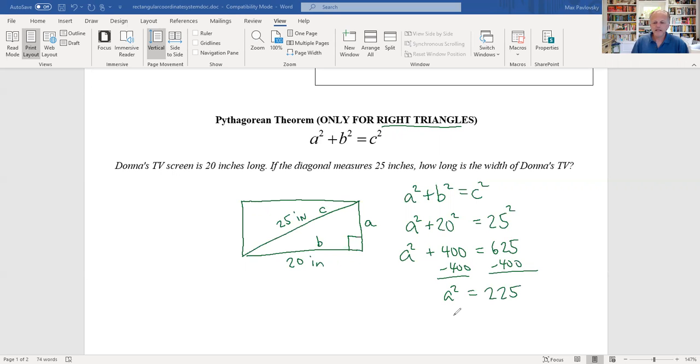We'll get a squared equal to 225. Now to find out what a is, I just take the square root. So I'm going to take the square root of both sides. And square root of a squared is a. Square root of 225 is 15. So the width of Donna's TV is going to be 15 inches.